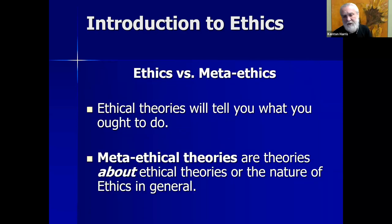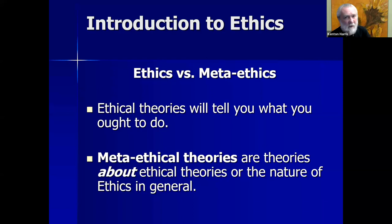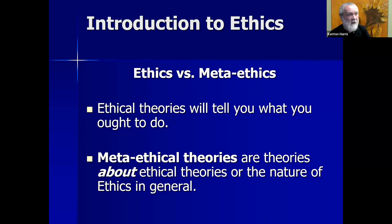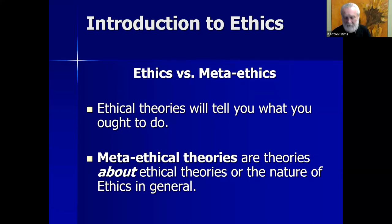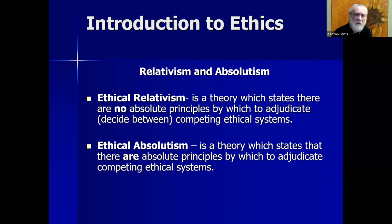Now we move to the second part: metaethical views of relativism and absolutism. Ethical theories are theories that tell you what you ought to do — Kant's theory tells you what you ought to do, Bentham helps you figure out the right thing, Aristotle gives advice on how to live your life. Metaethical theories are theories about ethical theories. So when I say ethical theories come in basically three varieties, that's a metaethical statement — I'm talking about ethical theories. The next thing we'll look at is the metaethical debate about the nature of ethics.